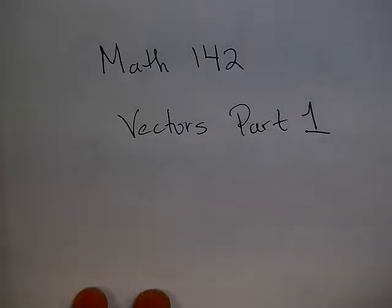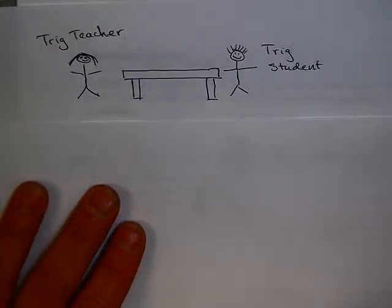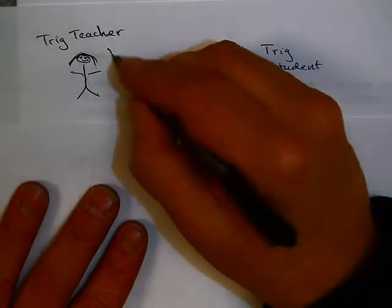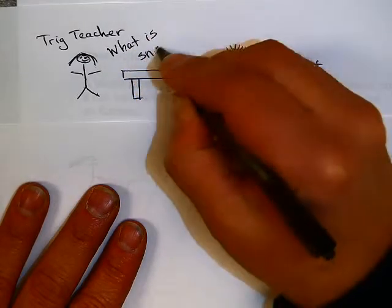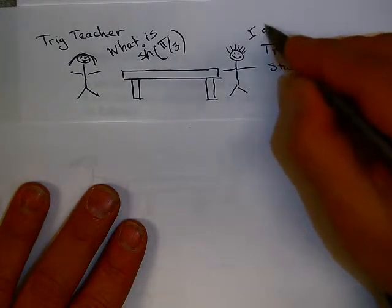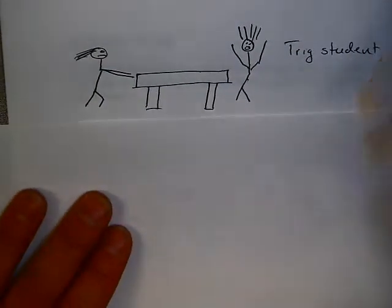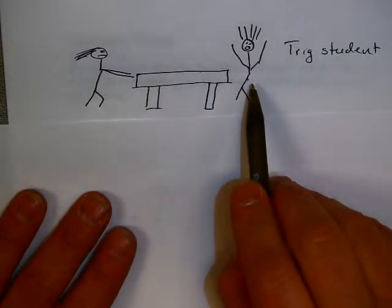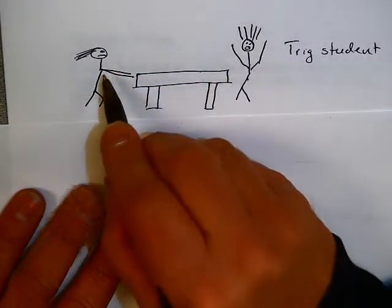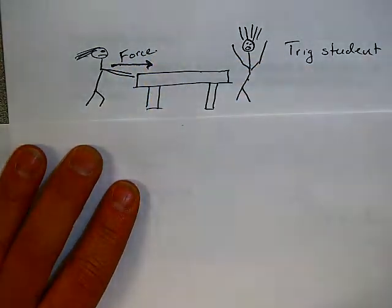What are some examples with magnitude and direction? Here's a typical trig teacher and a typical trig student enjoying each other in class. The trig teacher might ask a question like, what is the sine of pi over 3? All the trig students watching this video know the answer, but this trig student might say, gee, I don't know. It could be that this trig teacher gets angry and pushes the table into the trig student. If that happened, the trig teacher would be applying a force. A force is an example of a quantity that has a magnitude and a direction.